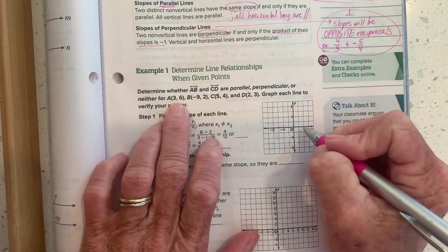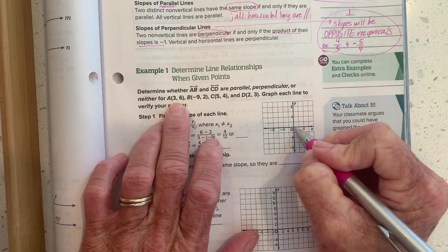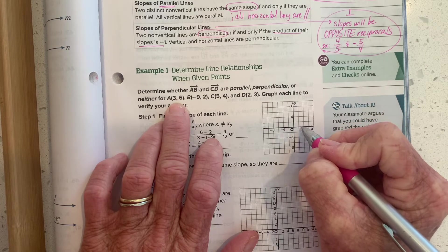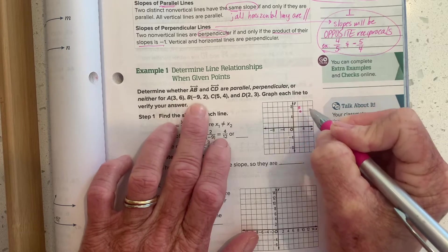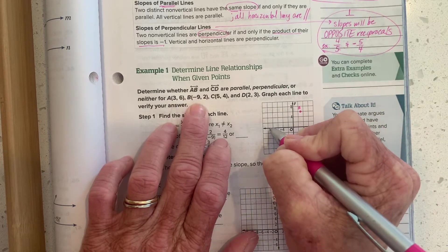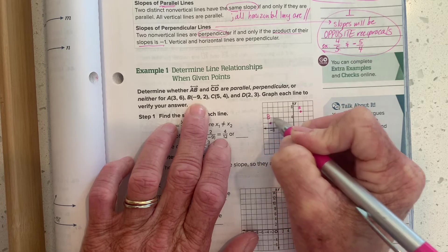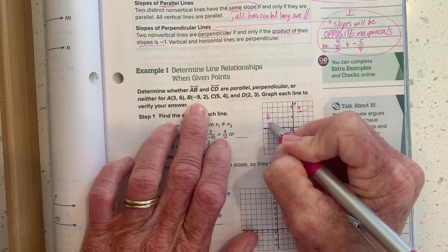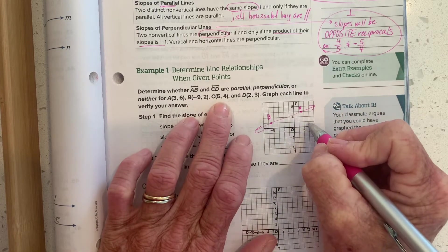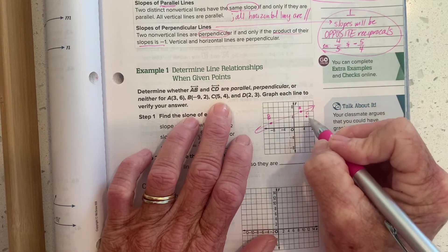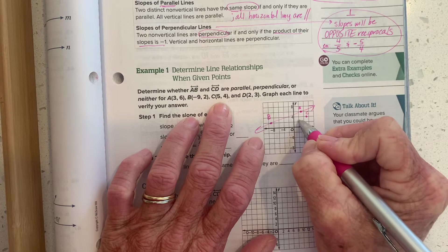So we have a graph. A is located at three six, but it looks like we're counting by twos. So over three, up six, there's A. B is at negative nine, positive two. So that's line AB. And then C is at five, four. And D is at two, three.